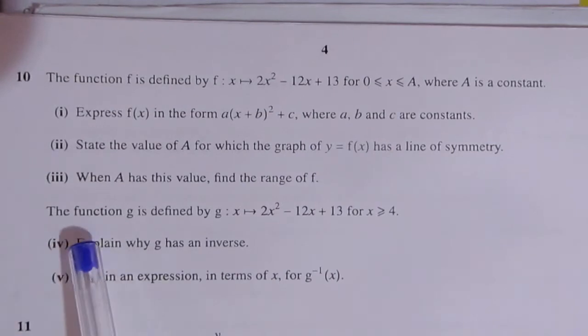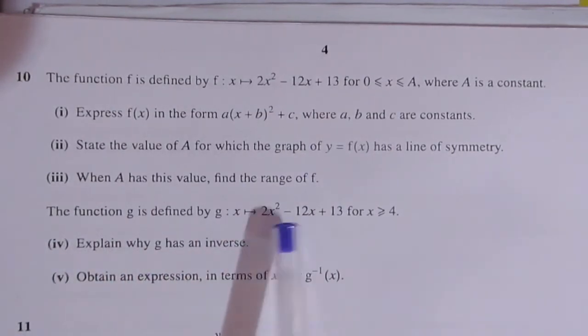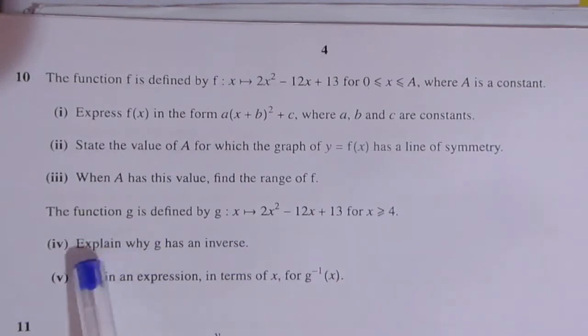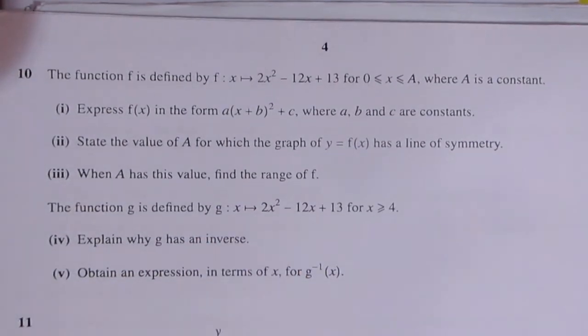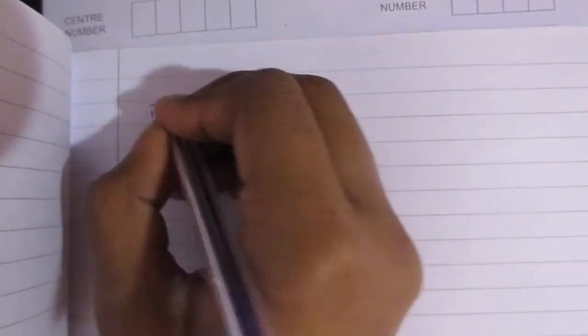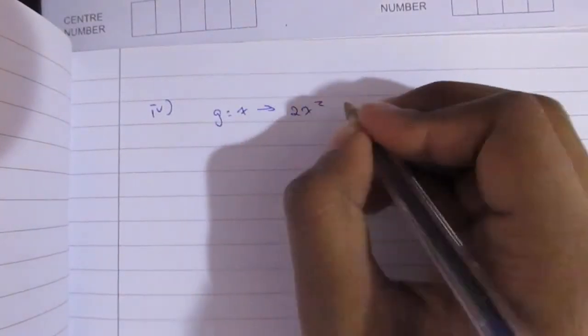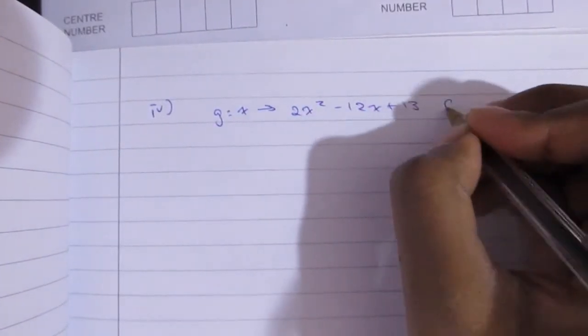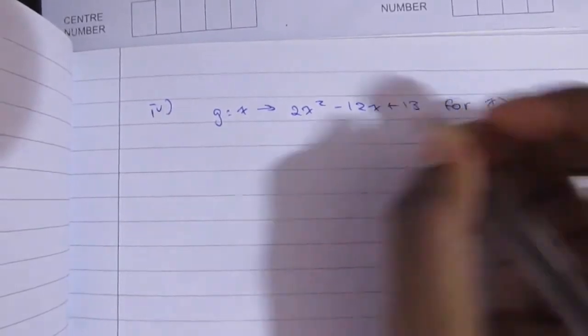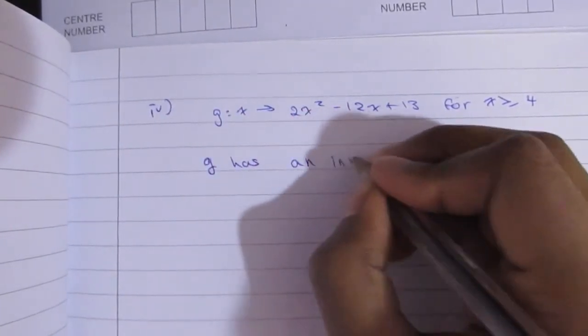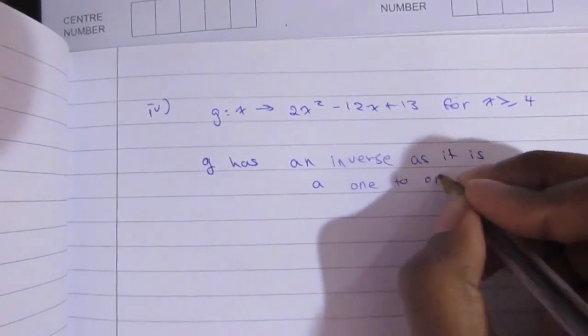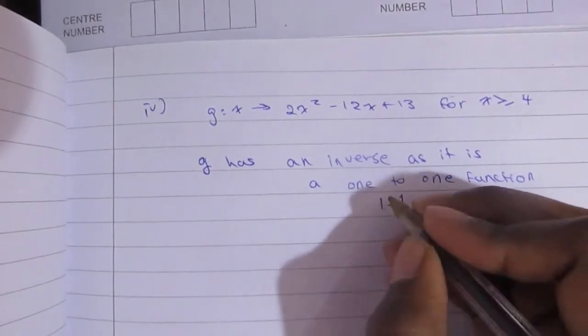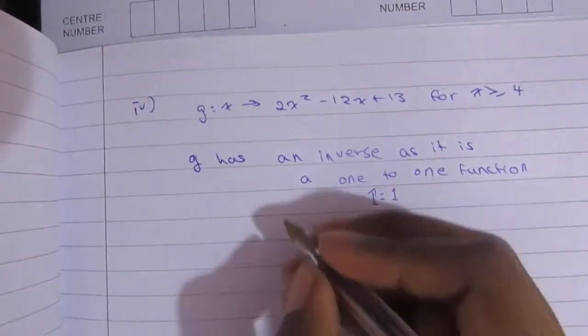Now part IV: explain why g has the inverse, and g is the same function 2x squared minus 12x plus 13, but this time x is greater than 4. And we have to obtain an expression in terms of x for the inverse of g. Okay, so of course write out what we need to know. And what we can do here is you can see in the graph that I have drawn that it has an inverse, and it's because it's a one-to-one function. Why is that? It's because the 4 is greater than 3.